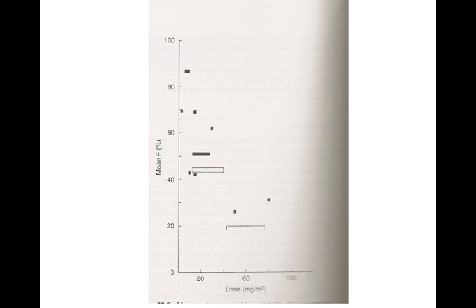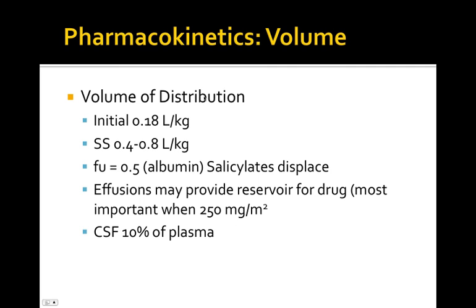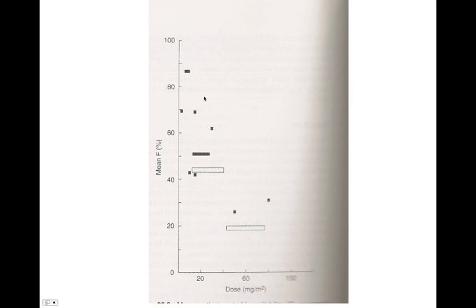This is important. As you can see on our x-axis here, we have the dose increasing from 10 milligrams per meter squared up to 100 milligrams per meter squared. The bioavailability on the y-axis goes from 0 to 100%. What we'd like to see is something that stays consistent as the dose increases, but you can see clearly that as you increase the dose, the bioavailability decreases.